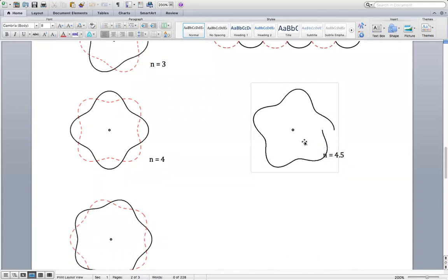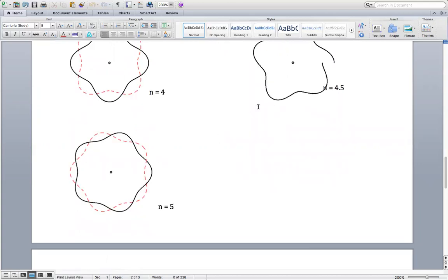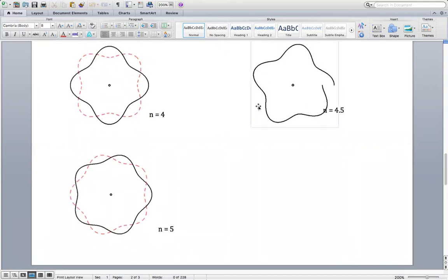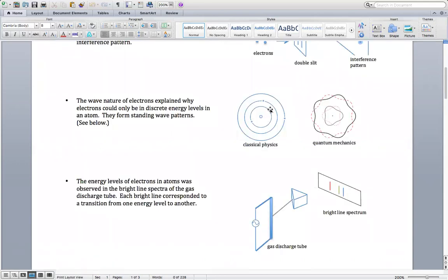That's just not going to work. By the time you come around, that extra half wave doesn't join up. The pattern, if it continued, you'd see that it's going to cancel out. Crest would be on top of troughs. So some standing wave patterns just can't exist. Every time we increase n, we're going up by one full wave and getting a higher energy level. In classical physics, electrons move in circles. In quantum mechanics, we have standing wave patterns. This is the idea of the cloud.